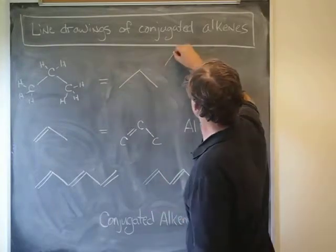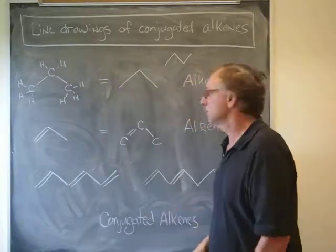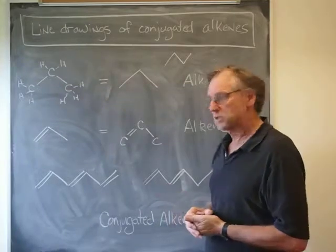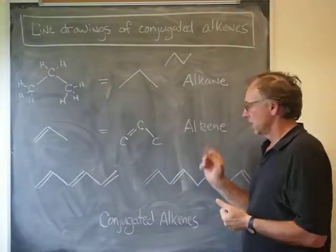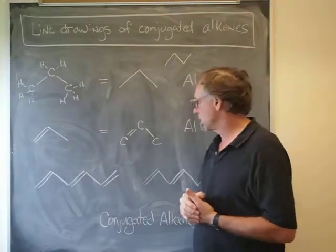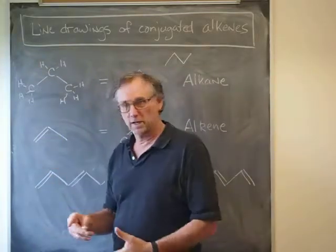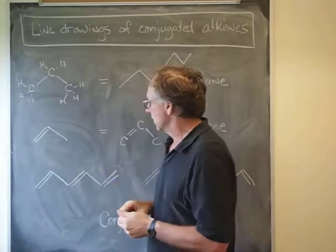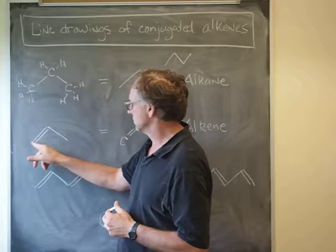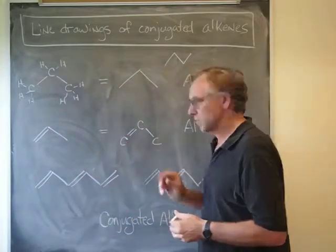The next longer molecule would just be written this way, and that would be butane — you can see it would have four carbons. I want to move on to an alkene; the difference in the vowel tells you that there's a carbon-carbon double bond. Here is a molecule called propene. You can see it has a double bond. Working through how this translates, I can see that there's an end, a kink, and another kink, which tells me there are three carbons.